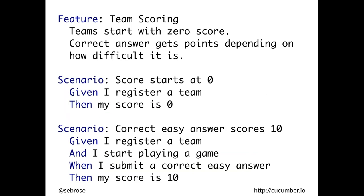Each scenario is an example. Here is an example of a feature file about scoring in a game, with a couple of scenarios in it. When Cucumber runs, it picks out the first scenario and runs the step definitions. In almost every environment where Cucumber or Specflow runs, if steps pass they get colored green, and if they fail they get colored red. At that point you know your specification is at odds with your implementation — because there's a defect in your code, you haven't implemented that feature yet, or the specification has become outdated because the implementation has changed.